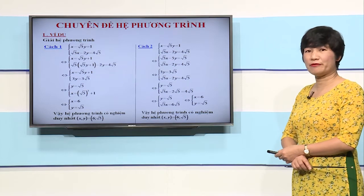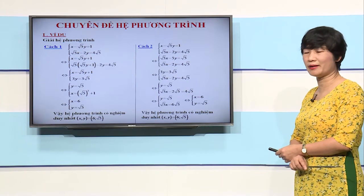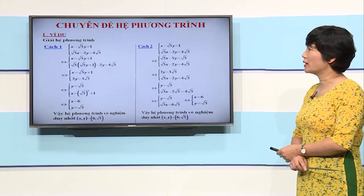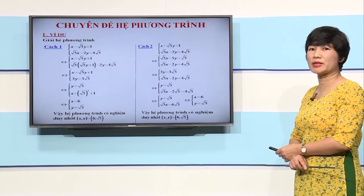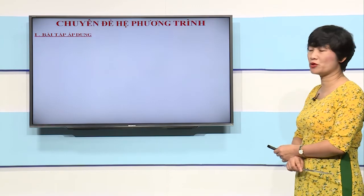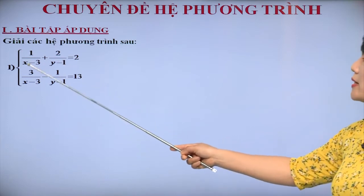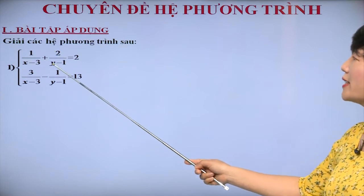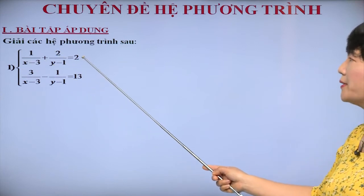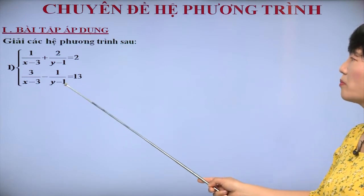Khi giải bài tập về hệ phương trình, chúng ta còn gặp các dạng hệ phương trình khác hệ phương trình bậc nhất hai ẩn. Để luyện tập cách giải hệ phương trình, cô cho mình cùng sang các ví dụ áp dụng sau đây. Giải các hệ phương trình sau: hệ thứ nhất có 1/(X trừ 3) cộng 2/(Y trừ 1) bằng 2; 3/(X trừ 3) trừ 1/(Y trừ 1) bằng 13.